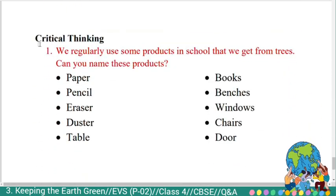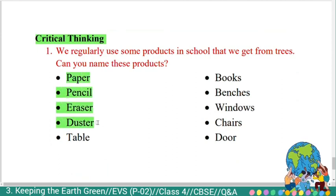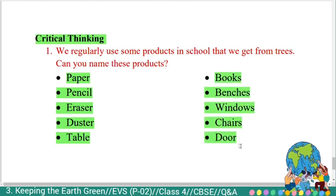Critical thinking questions. First question: 'We regularly use some products in school that we get from trees. Can you name these products?' Answer: Paper, pencil, eraser, duster, table, books, benches, windows, chairs, door — all these things we get from trees.